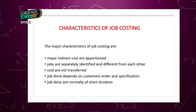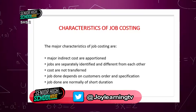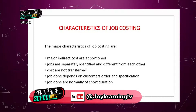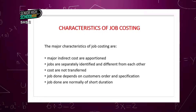Characteristics of job costing: 1. Indirect costs are apportioned, unlike direct costs which are allocated. 2. Jobs are separately identified and different from each other. 3. Costs are not transferred — they remain on one job. 4. Job done depends on the customer's order and specification. 5. Job done depends on the customer's requirement. 6. Job done is normally of a short duration, as compared to contract costing.